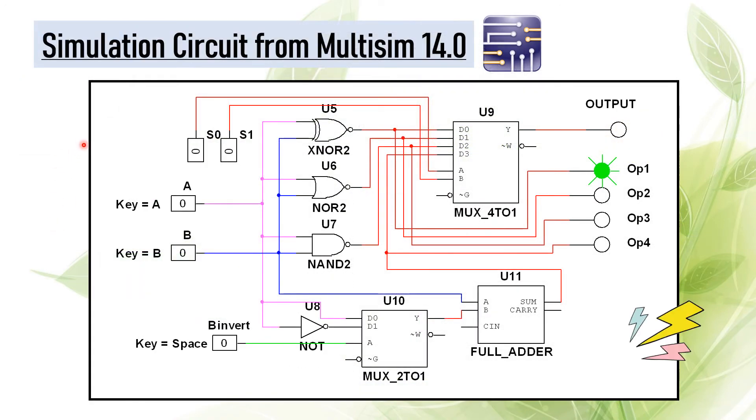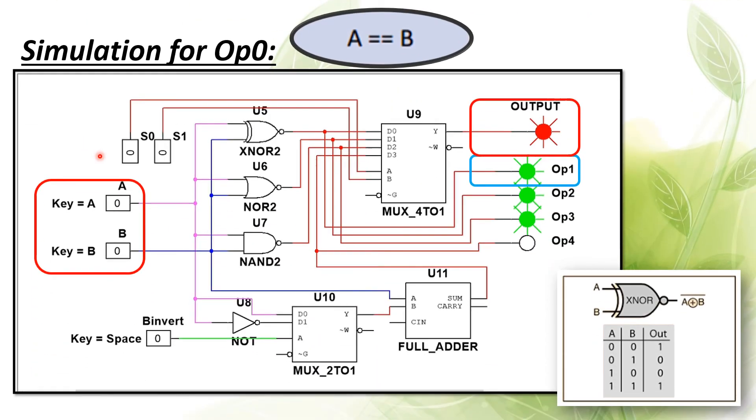This will be the simulation circuit that is built to test the functionality of the circuit as I designed just now. We are starting with operation zero. We set S0 and S1 to equal zero. As you can see, operation one is following the input of A and B.